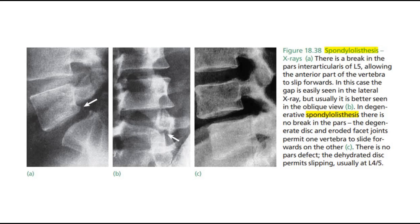These are some more pictures for spondylolisthesis. In picture A, there is a break in the pars interarticularis of L5 which allows the anterior part of the vertebra to slip forward. In picture B, showing degenerative spondylolisthesis, there is no break in the pars.